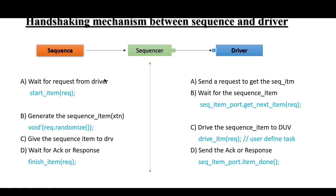Let me explain the four points of the handshaking mechanism. First, since the driver is an initiator, it will send a request to get the sequence item. It waits for the sequence item by calling the predefined method sequence_item_port.get_next_item(), providing the request object within parenthesis. This request is an object of the transaction class. On the sequence side, it will wait for the request from the driver by calling the start_item() method, providing the request object.